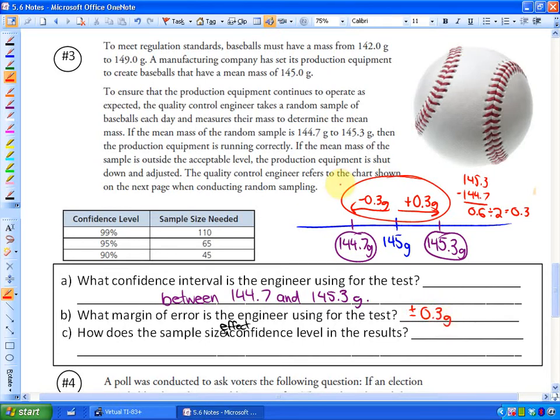And the last question has to do with this table here that I've circled in green. It says, how does the sample size effect the confidence level in the results? And this should be pretty clear to you. If we have a bigger sample size, the confidence level is higher and vice versa. The lowest sample size has the lowest confidence level. So you're more confident if you use more samples, more confidence that what you're measuring is close to the mean. So how does sample size affect confidence level?